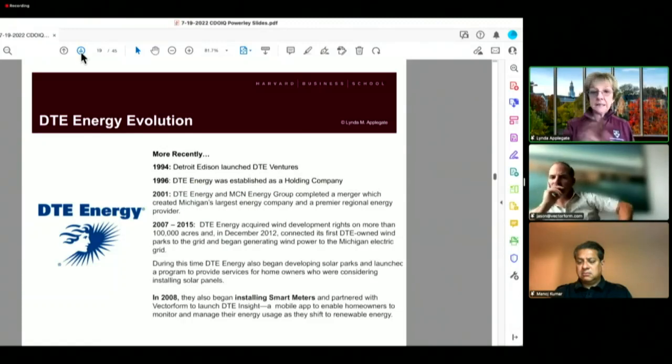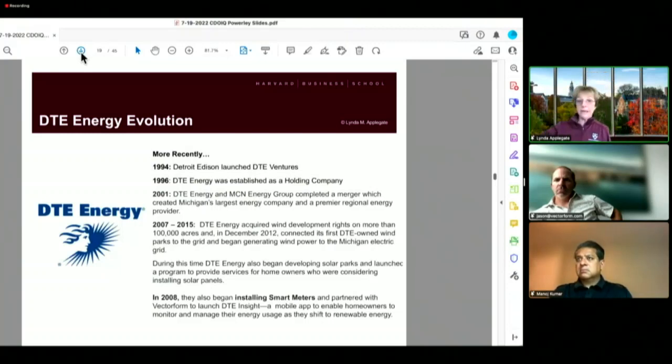In 96, DTE Energy was established as a holding company. In 2001, DTE Energy and MCN Energy Group completed a merger which created Michigan's largest energy company and a premier regional energy provider.